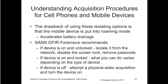A drawback of isolation options is that the mobile device is put into roaming mode, which accelerates battery drainage. SANS DFIR recommends that if the device is on and unlocked, isolate it from the network, disable the lock screen, and remove passcodes. If the device is on and locked, what you can do varies depending on the device type — as seen with major lawsuits between the FBI and Apple related to the San Bernardino terrorist attack. If the device is off, attempting a physical static acquisition and then turning it on may also work.